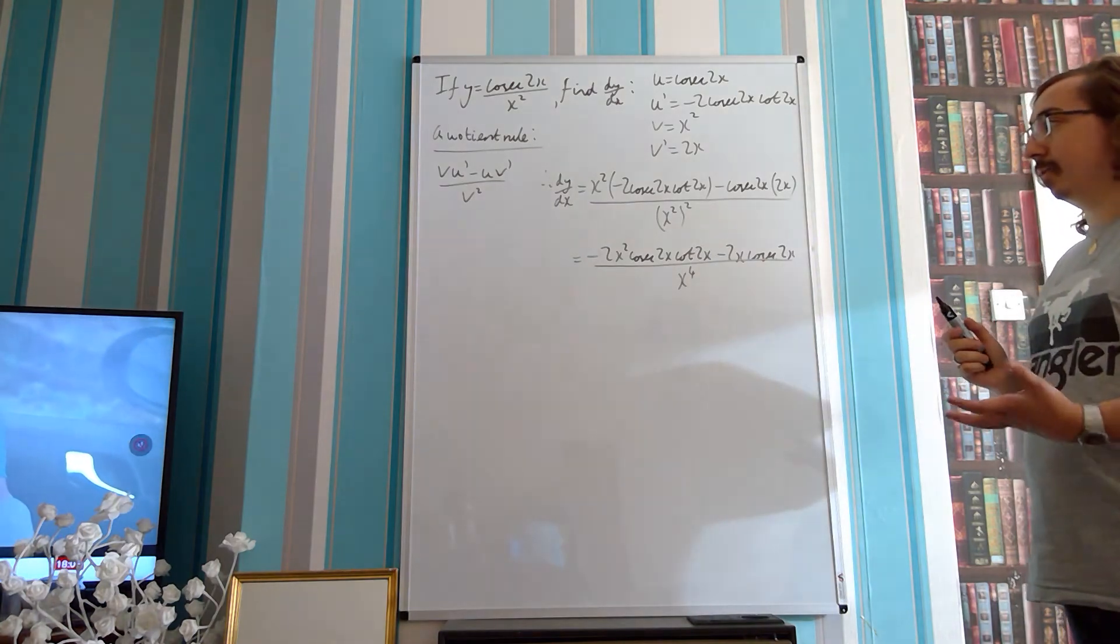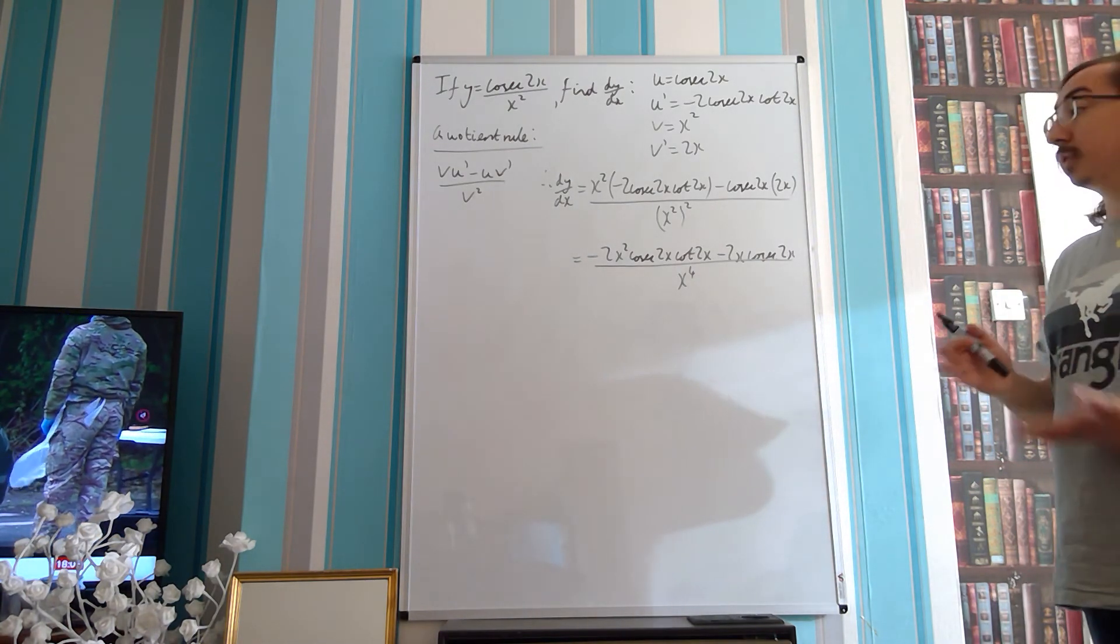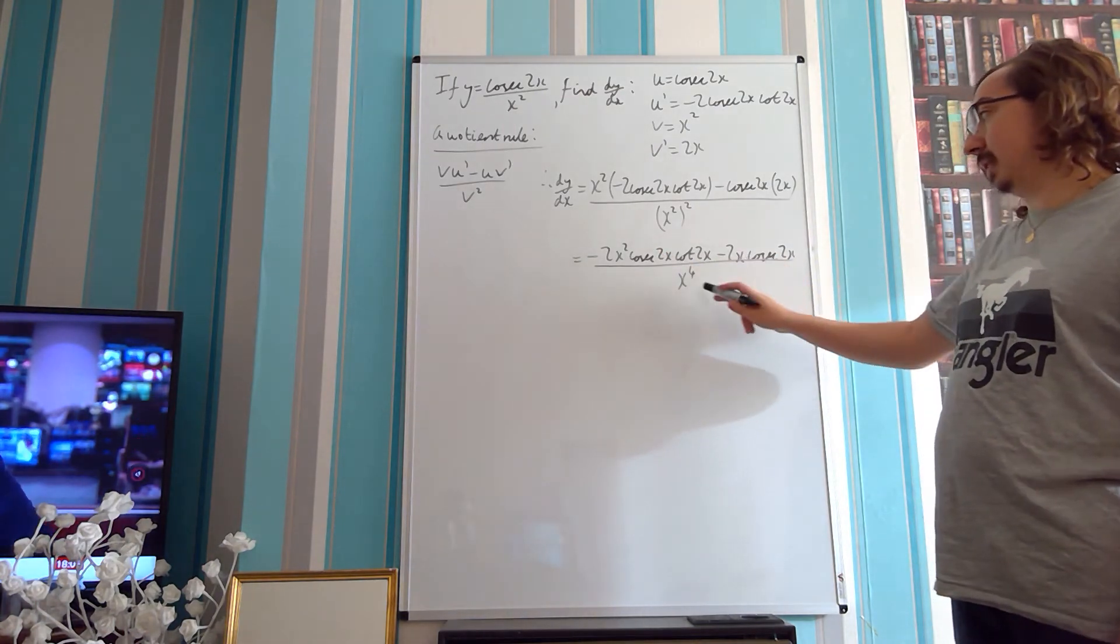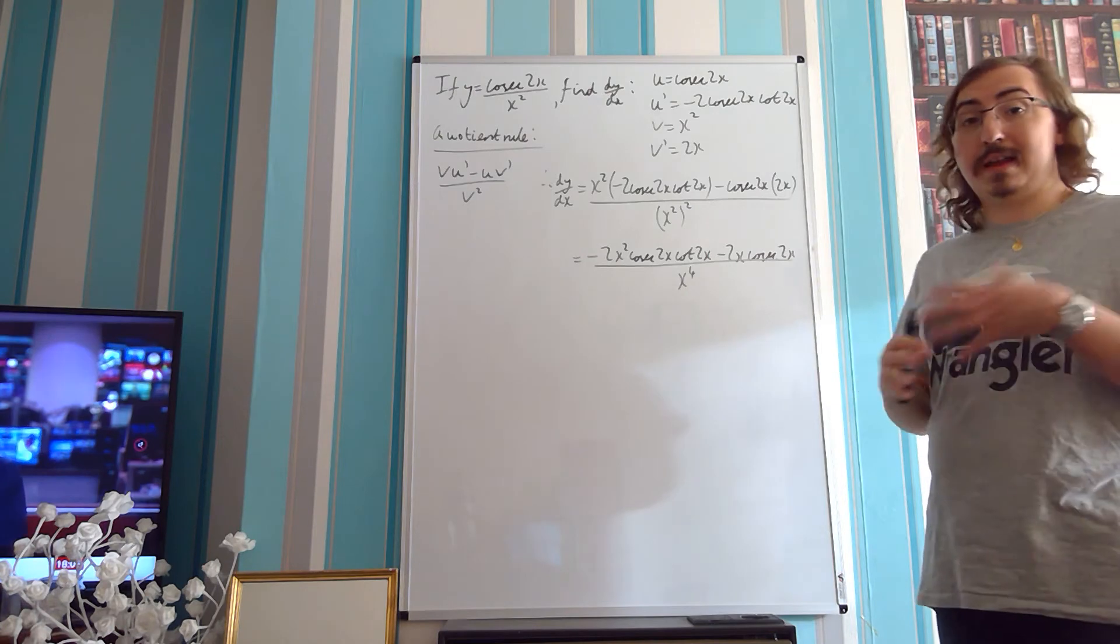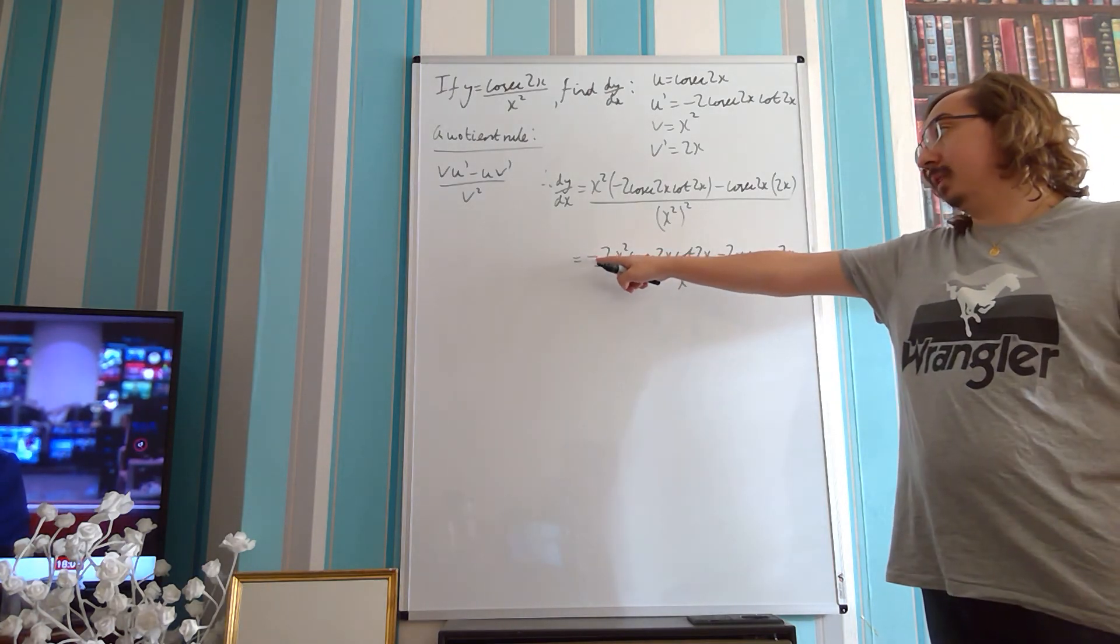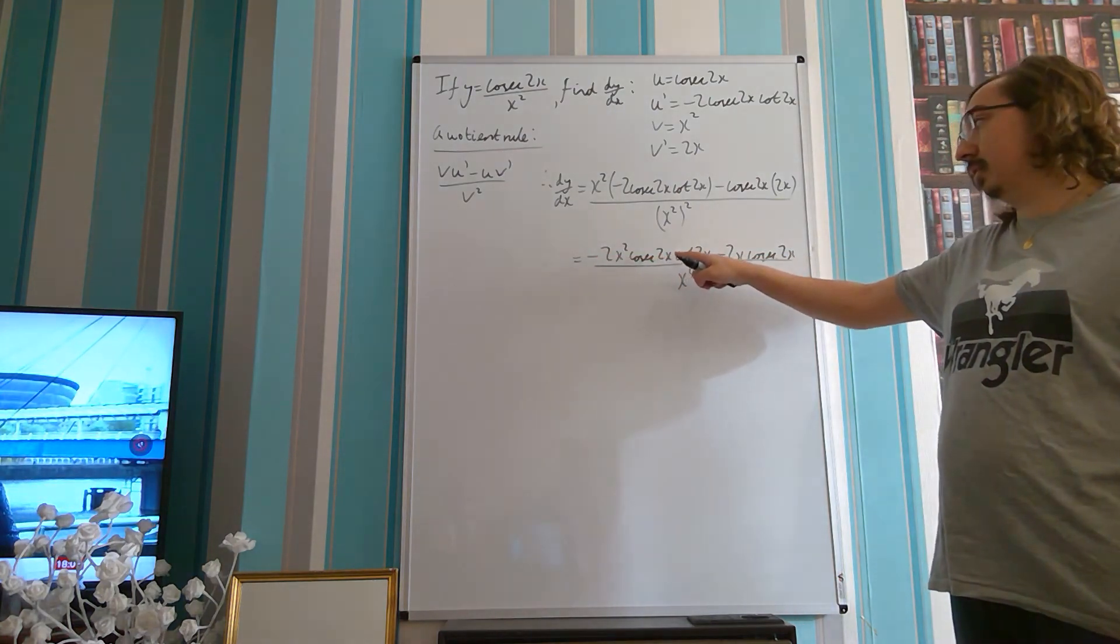And you're going to say, well, we've got some common factors, and actually we've got some things which will cancel as well. So we've got an x squared here, an x here, and an x to the 4 here, so we can divide everything through by x. We can also take out a common factor in the numerator of minus 2 cosec 2x.